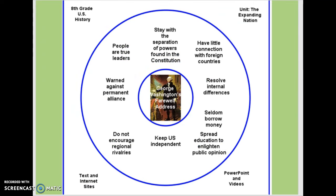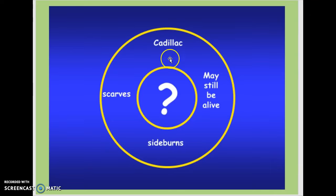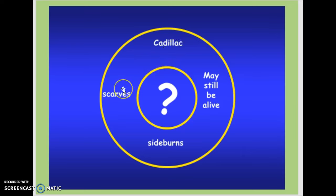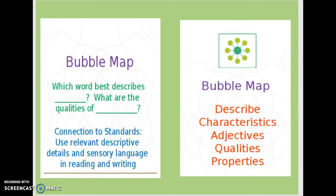Another circle map covers George Washington's farewell address. The sources are around the frame of reference — that's where they found all of their information — and within it are all the things that define his farewell address, like it kept the U.S. independent and it resolved internal differences. You can also use any of the thinking maps for assessments. Here's one of my favorites: you have clues and have to figure out what goes in the middle. Who drives a Cadillac, may still be alive, has rocking sideburns, and wears scarves? It's Elvis. That's circle maps.